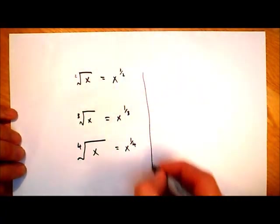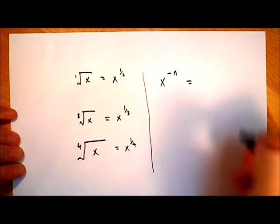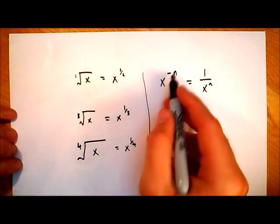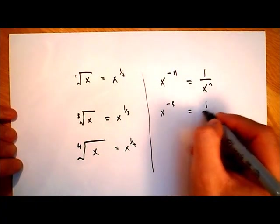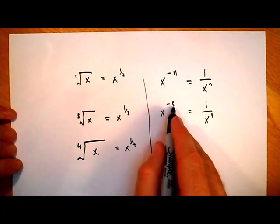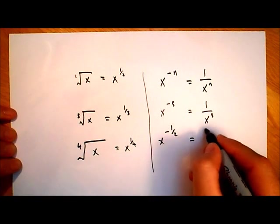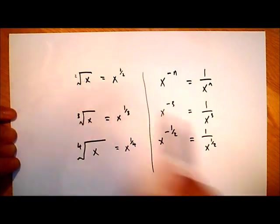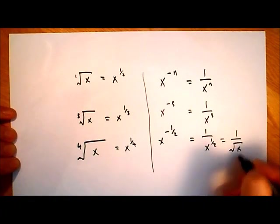If you remember when we covered this: x to the power of minus n is the same as one over x to the power of n. So if I have x to the power of minus a half, that's just going to be one over x to the power of a half. And x to the power of a half means the square root of x. So one over x to the power of a half is the same as one over the square root of x.